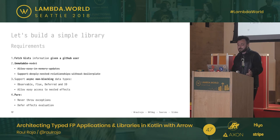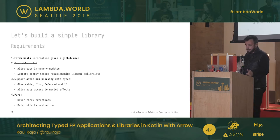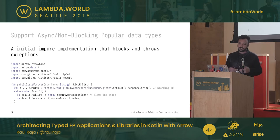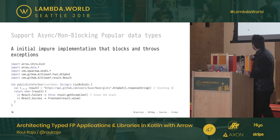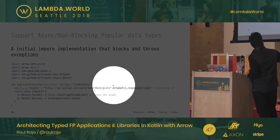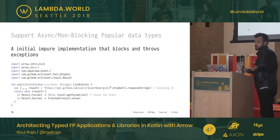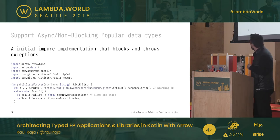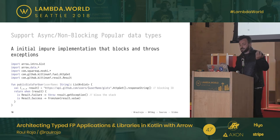We've provided an immutable model that allows easy in-memory updates and supports deeply nested relationships without boilerplate. Next we'll look at an initial impure implementation that blocks and throws — things we don't want — and then evolve it into something purely functional. In this implementation we perform an HTTP GET and receive the response as a string, which blocks. We're also throwing exceptions if the result is an error, which will blow the stack.